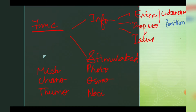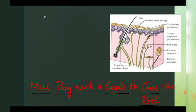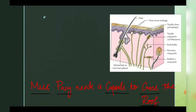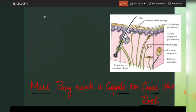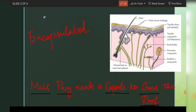Now, to remember the capsulated and non-encapsulated types — we need to remember either one, and the other will be easy. So, here is a mnemonic for the encapsulated receptors: 'Miss Pessy needs a capsule to cross the roof.'